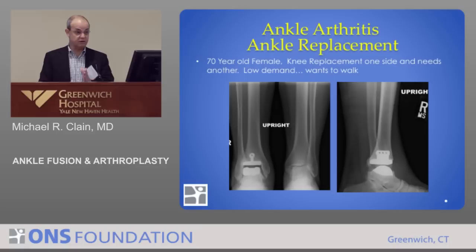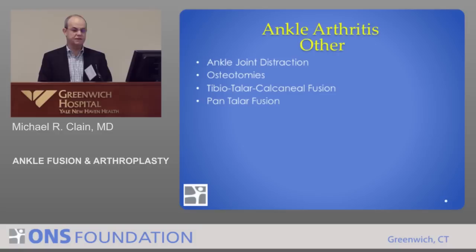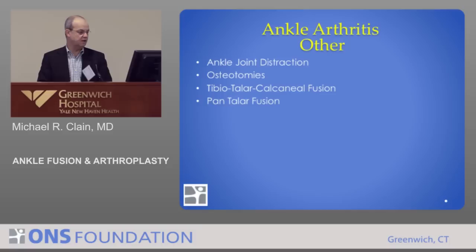There are a few other ways to treat ankle arthritis. Ankle joint distraction uses an external fixator to stretch out the ankle — a couple of practitioners tout that, but most people think the cure is worse than the disease, though it may be appropriate for a small population. Osteotomy involves straightening things out. And then there are much bigger fusions for patients who have more complex problems.